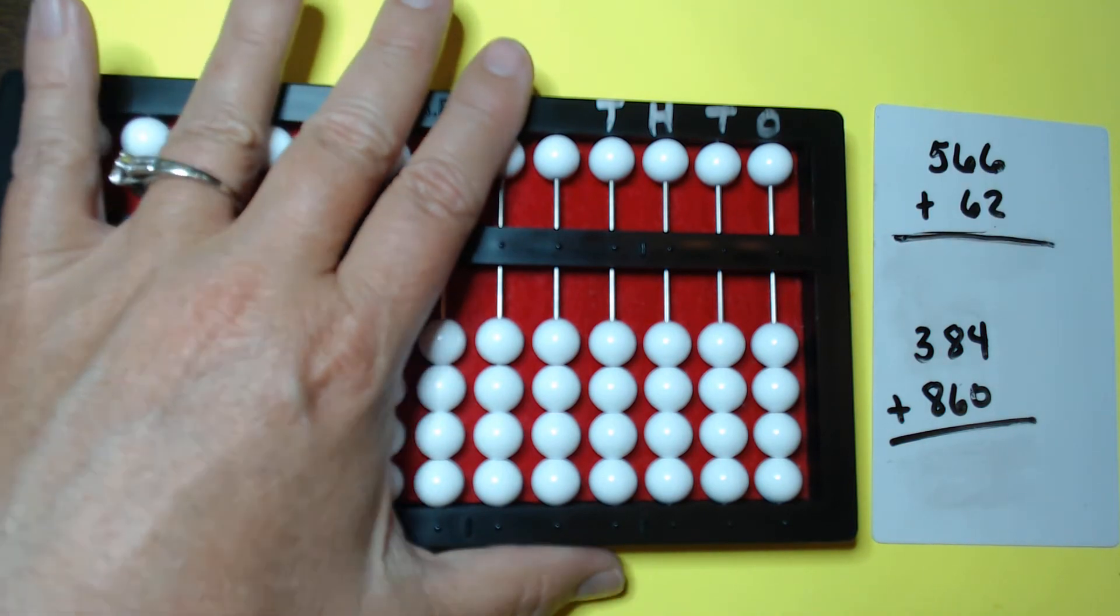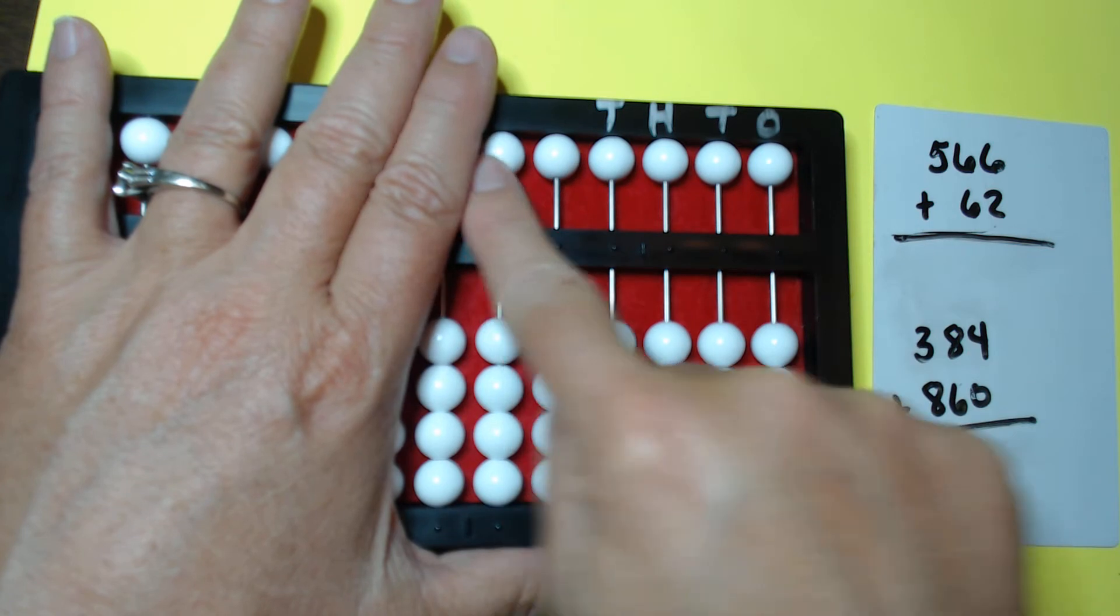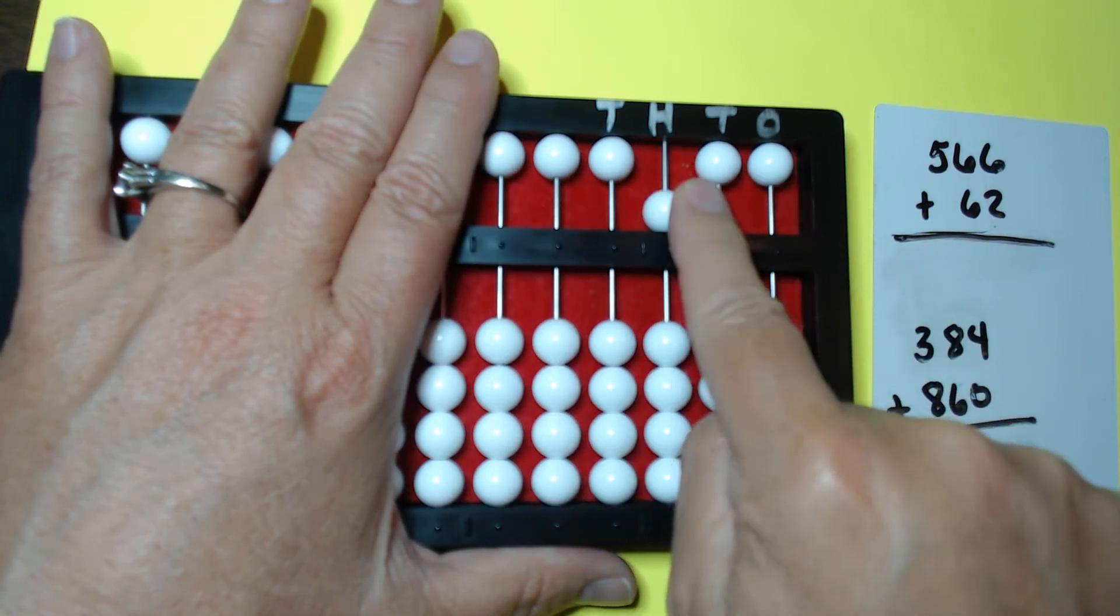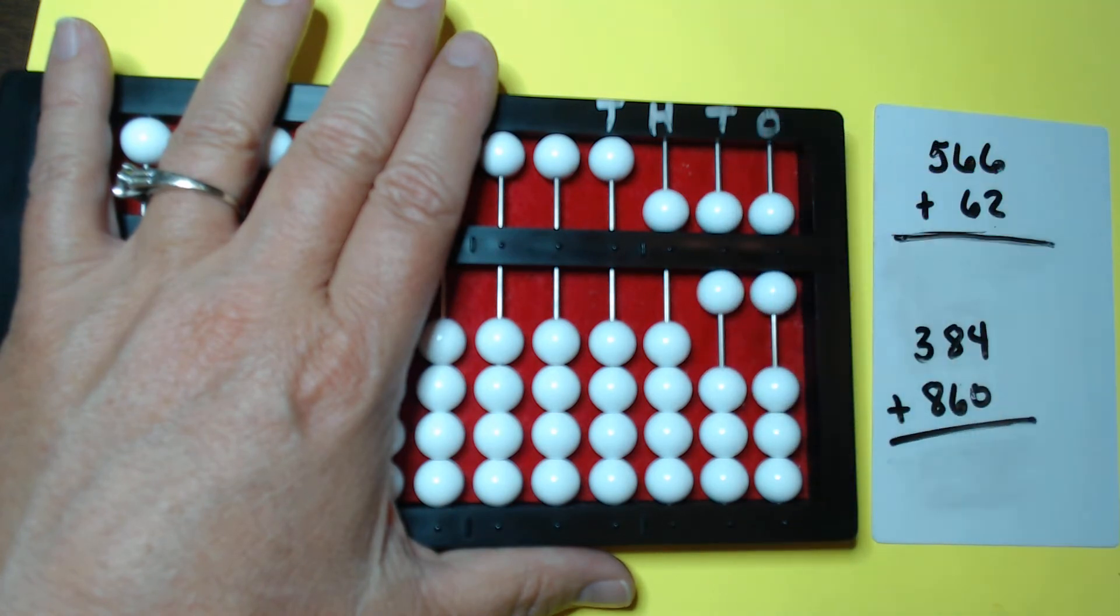So let's set 566. We're in the hundreds column. Remember these are the five beads up here, so I could just drop that. 566, and I'm going to add 62.